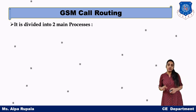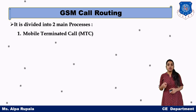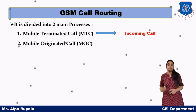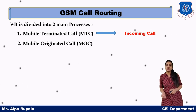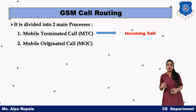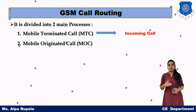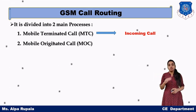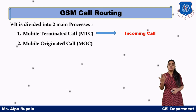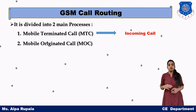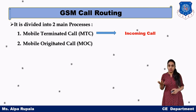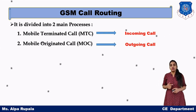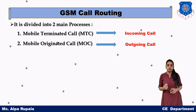GSM call routing is mainly divided into two processes: first, mobile terminated call, and second, mobile originated call. Mobile terminated call is nothing but your incoming call, and mobile originated call is your outgoing call. So your incoming call is referred to in technical terms as mobile terminated call, and your outgoing call is referred to as mobile originated call.